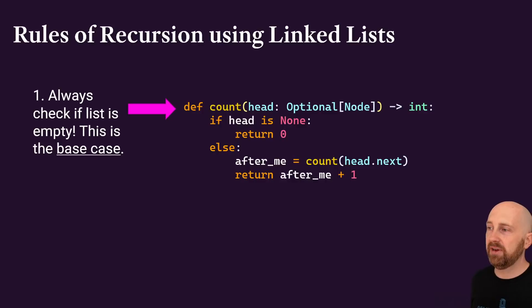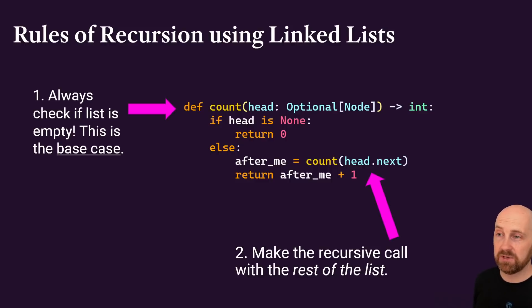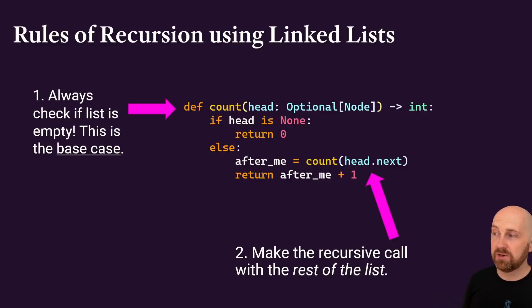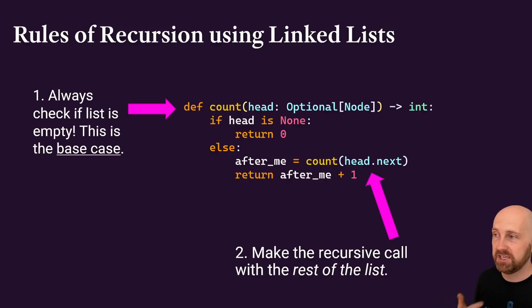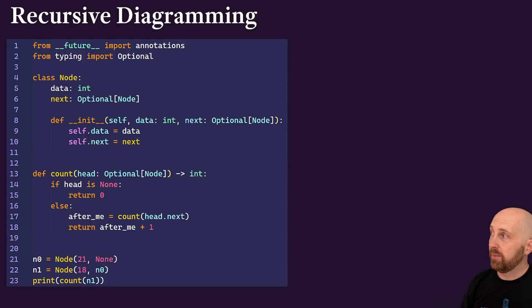We can demonstrate this with a memory diagram trace. In the slide deck example it's slightly different but not meaningfully so — we check first if the list is empty (if head is none). With the recursive call, we store the result in a variable named after_me. Otherwise, we count how many nodes come after me by saying count(head.next), and return after_me plus one because we include ourselves in the count.